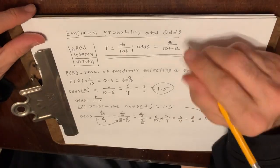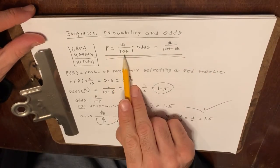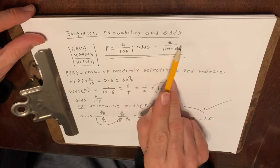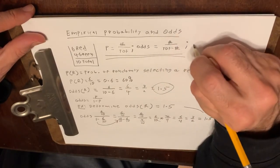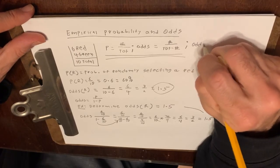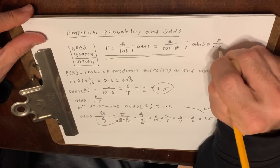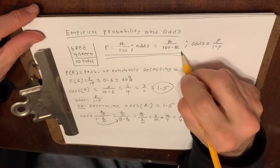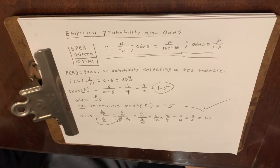So we actually have three things here. We have probability is number divided by the total. Odds is number divided by the total minus the number. And odds is also equal to P over 1 minus P. Three things, one video. I hope this was helpful.